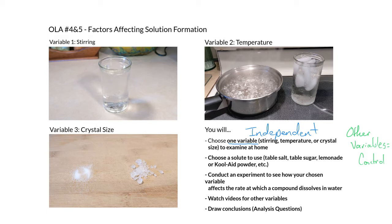You can either use table salt, table sugar, lemonade, or Kool-Aid powder, or something else that you can find around your house. It just has to be a crystal. We need crystals. If we don't have crystals, then it's not like an ionic compound—it's not like a road deicer.